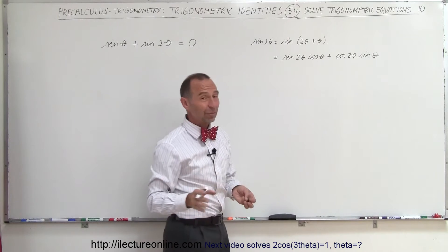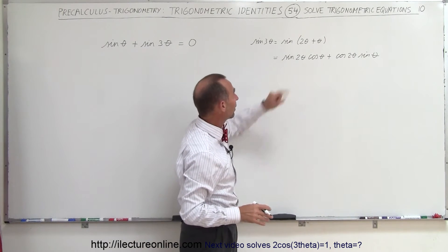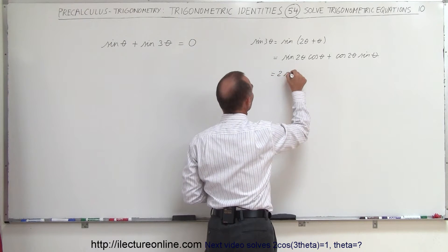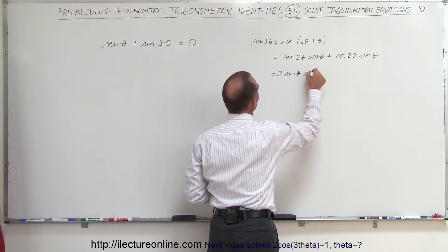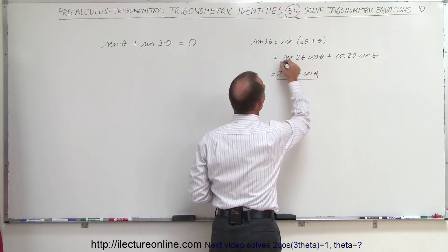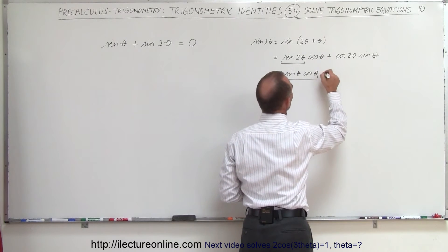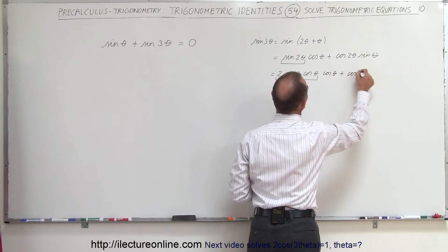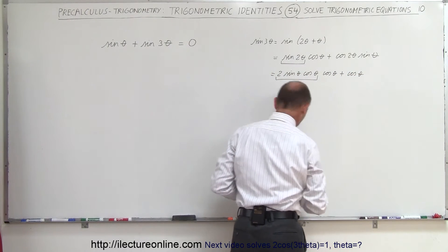Now we still have to expand this a little bit more. The sine of 2 theta can be written as 2 times the sine of theta times the cosine of theta. So the first term becomes 2 sine theta cosine theta times cosine theta, plus cosine of 2 theta times sine of theta.